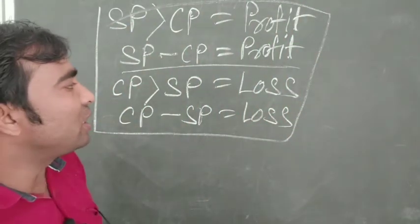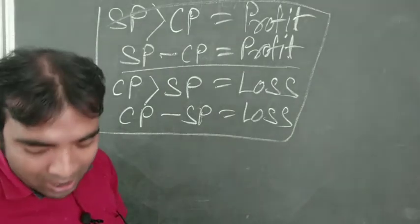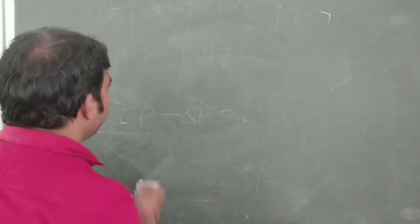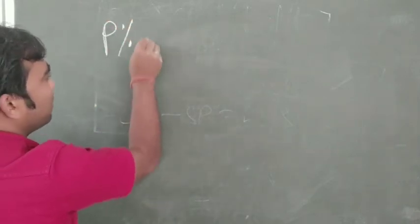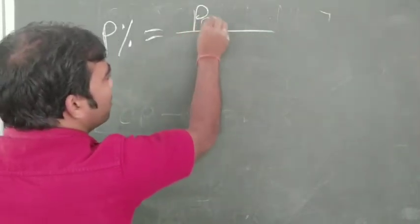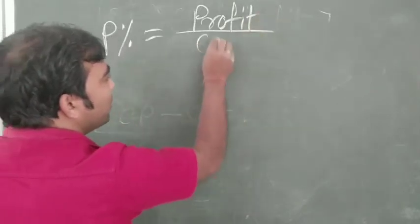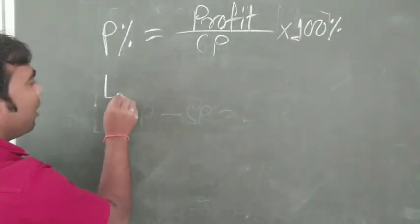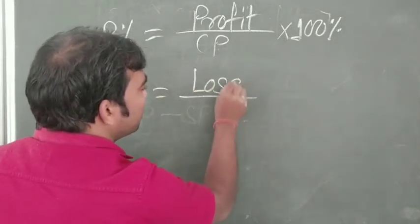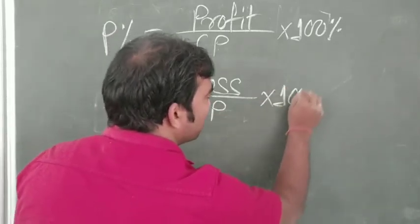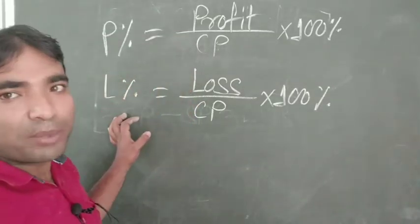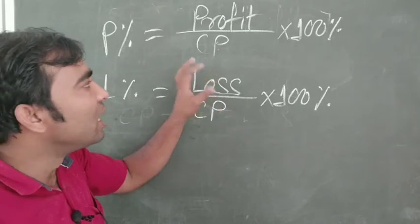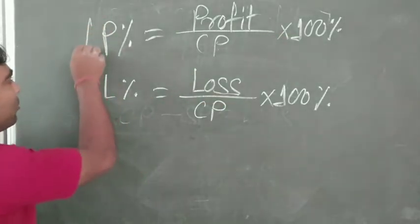By using these two equations we can easily find out the profit or loss amount. To find out profit percentage: profit percentage equals whatever profit we got, divided by CP, into 100%. Similarly, loss percentage equals whatever loss divided by CP into 100%. CP is very important here — if we know CP and the profit or loss amount, we can easily find the profit or loss percentage.